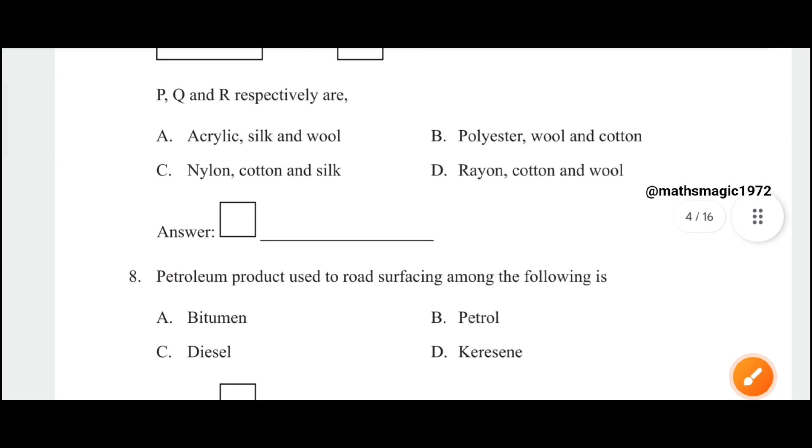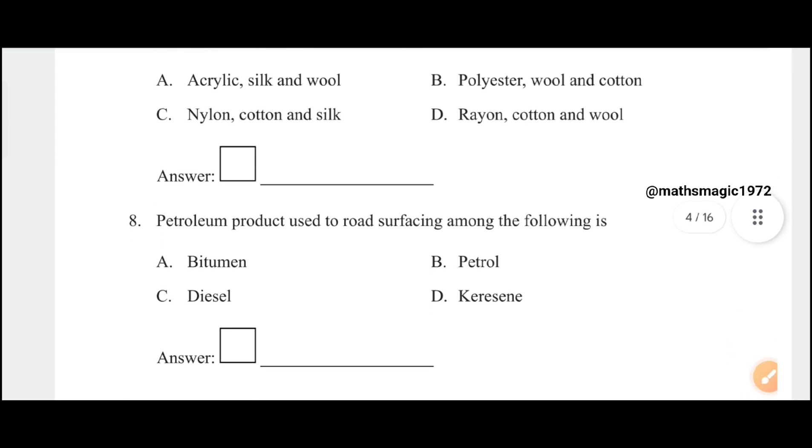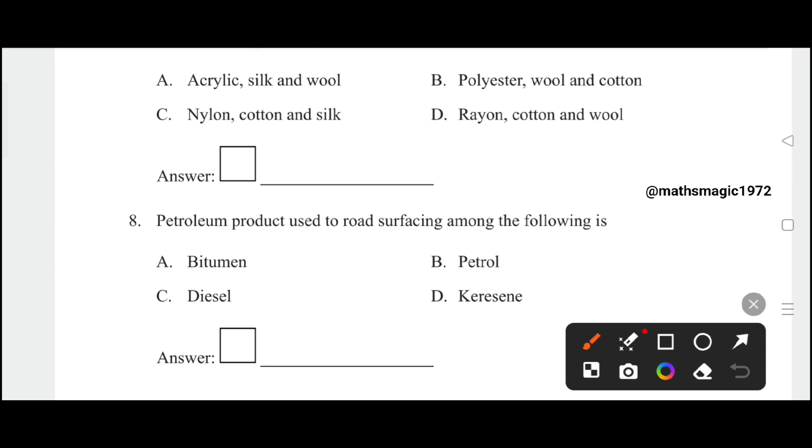Petroleum product used for road surfacing among the following is bitumen. This is a very important question. The correct answer is option A, bitumen.